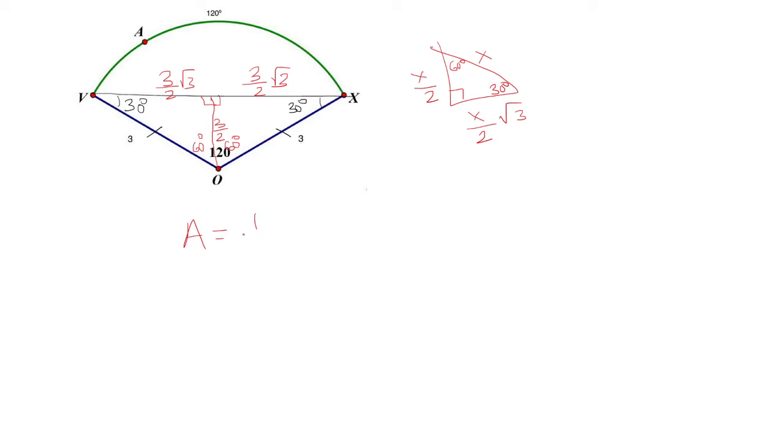So the area of the triangle is 1 half base times height. So the base, well really because these two are the same, you could just say half of the base is going to be each one of these. Because when you add them up, you get the entire base. That's going to be 3 root 3 over 2.